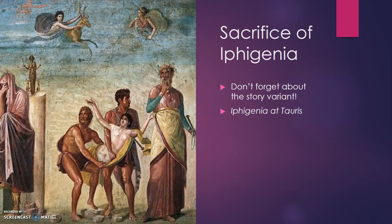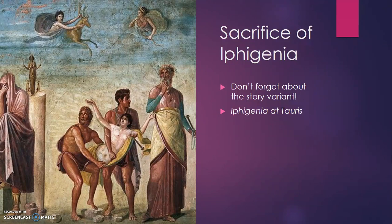Before we get started with some new background, I wanted to quickly review what we learned last time from our reading of Agamemnon: Iphigenia, the daughter of Agamemnon, is sacrificed at the city of Aulis to ensure that the winds would blow so that the ships stationed at Aulis could sail across the Aegean Sea to get to Troy. The goddess Artemis was the one who told Agamemnon he needed to sacrifice his daughter, and this was interpreted for him by the prophet Calchas, who was essentially the Greek army's priest.